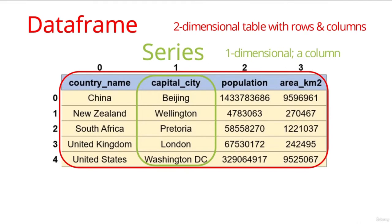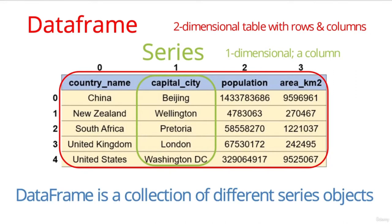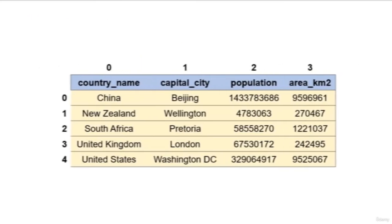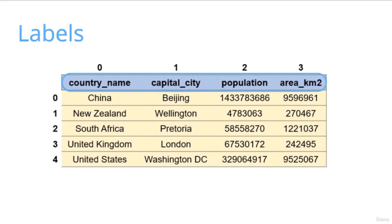In this example, the country name is a Series object with a text data type, while the population is another Series object with a numerical data type. You can think of a DataFrame as a collection of different Series objects. Later in this course, we will learn how to create DataFrames with one or more Series objects, or group multiple Series objects into one DataFrame. The group of Series names are known as labels, while the actual values are data.